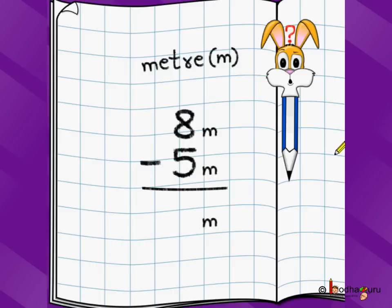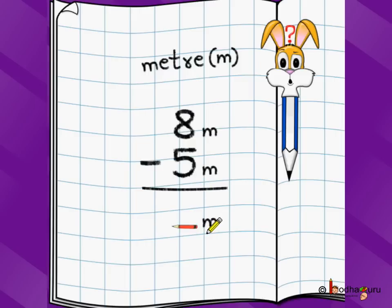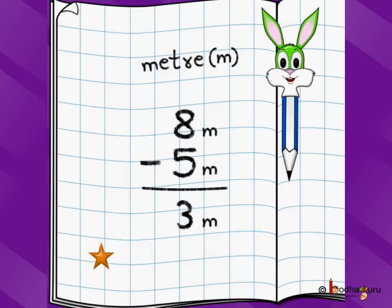Let's say you have eight meters of cloth in your shop and a customer buys five meters of cloth. How much cloth is remaining with you in the shop? We write meter at the top and we write eight meter minus five meter, because we had eight meter in the beginning and five meter is sold. So we do subtraction. Eight meter minus five meter, and in the answer we also write meter. Eight minus five is three. So we have three meters of cloth remaining in the shop.